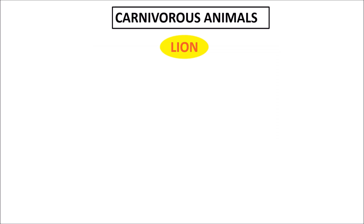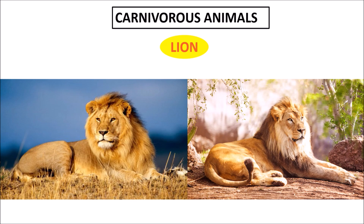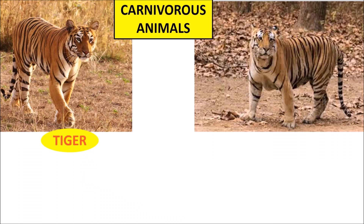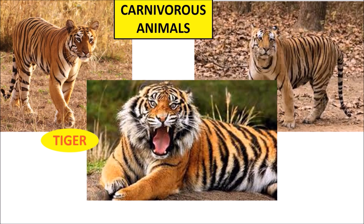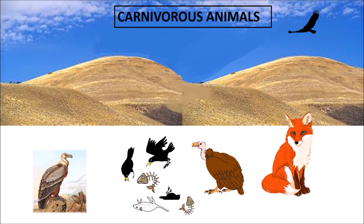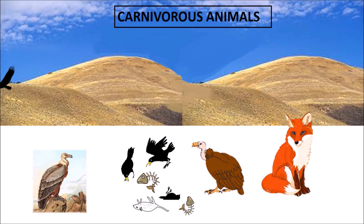Carnivorous animals: animals like lion, hyena, snake, and frog hunt other animals and eat them. Some animals like fox and vulture eat the remains of dead animals. Animals which only eat other animals are called carnivorous animals.